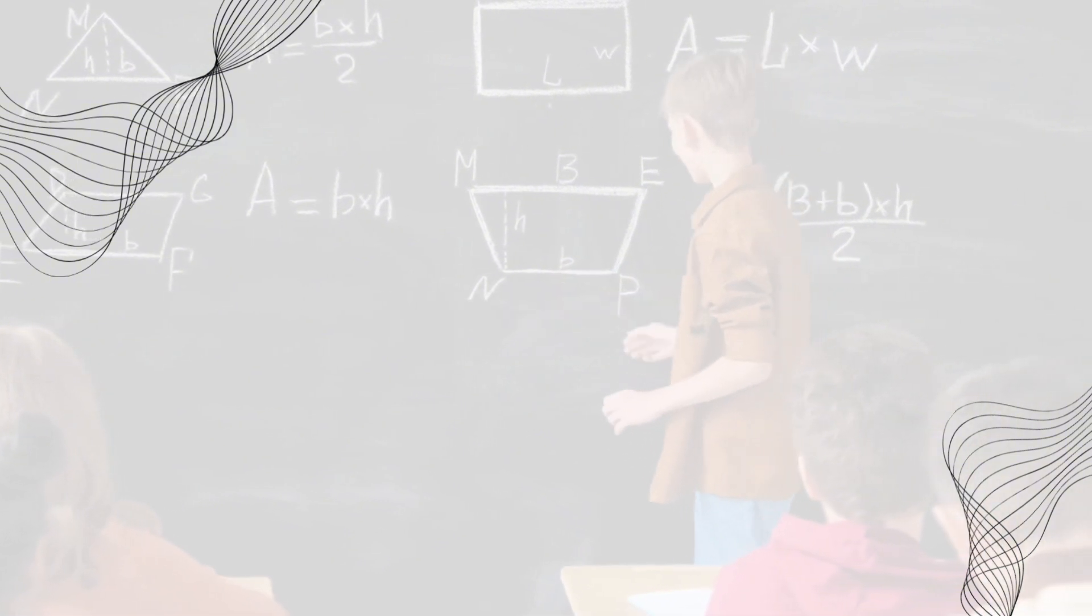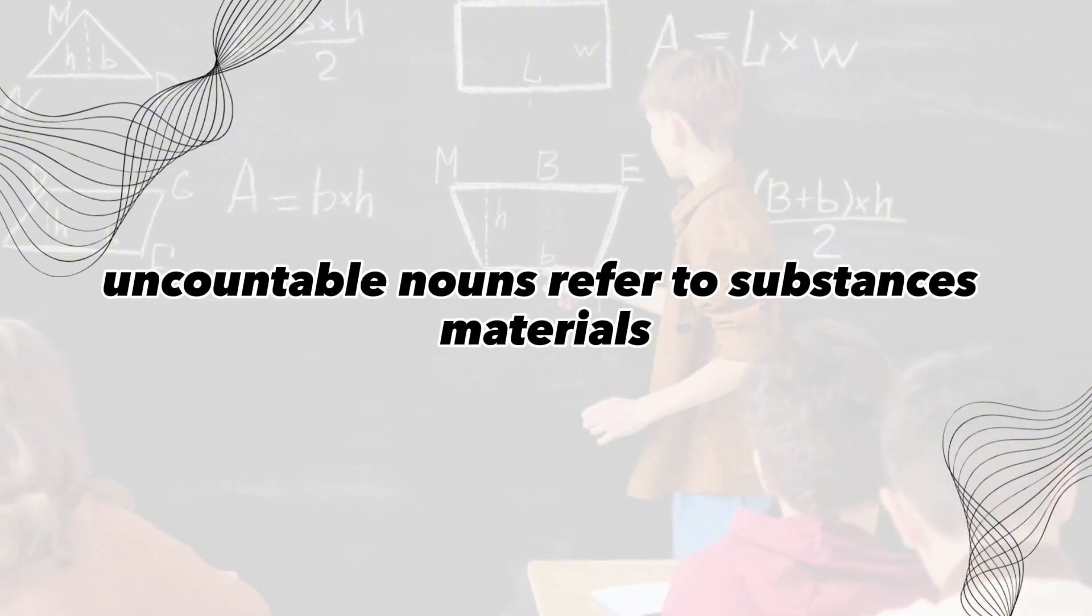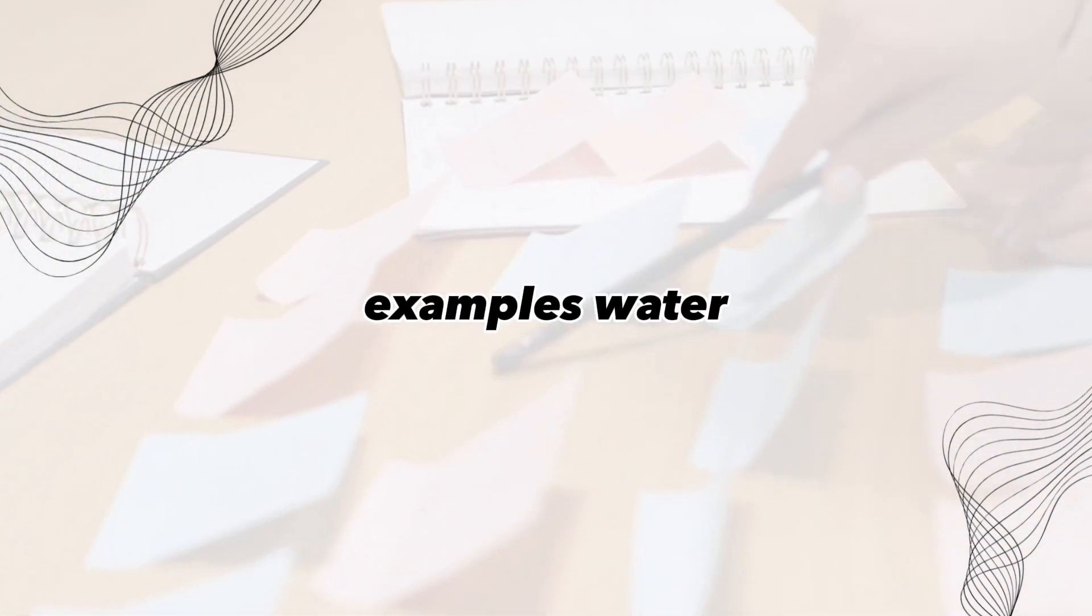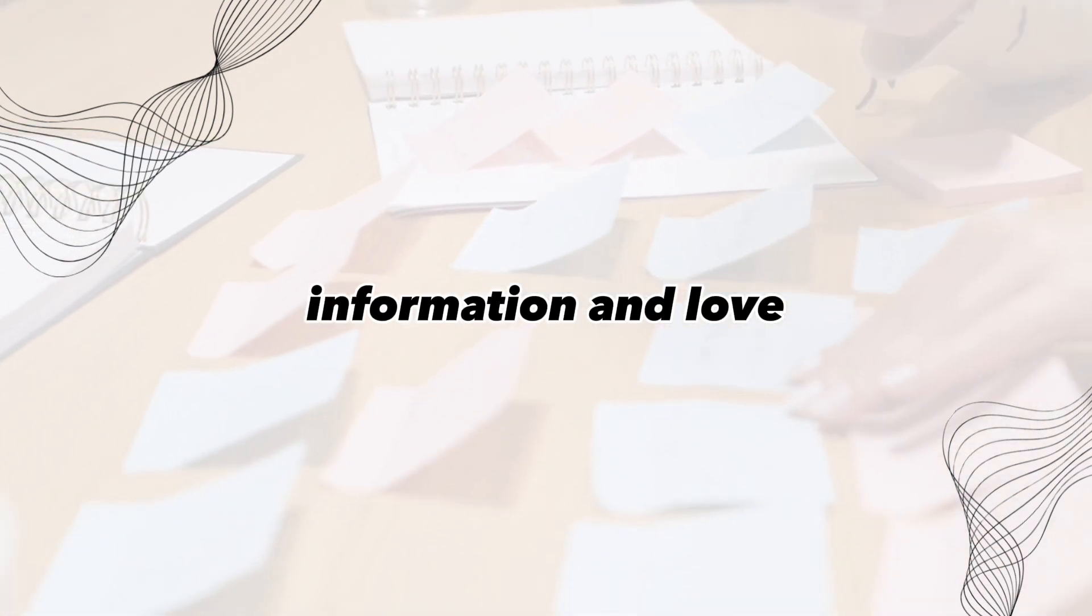Uncountable noun. Uncountable nouns refer to substances, materials, or concepts that cannot be counted individually. Examples: water, information, and love.